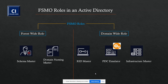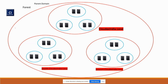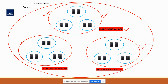Let's talk about the forest-wide rules first. Schema master is unique inside the complete forest. Take an example: you have a forest structure with three domains. The first domain works as a parent domain — this is cloudx india.local — and the other two work as child domains. Since this is your parent domain and also your forest domain, these two roles will be inside this parent domain.